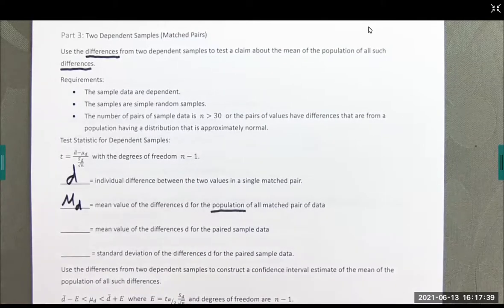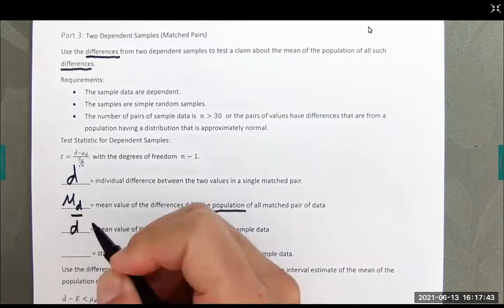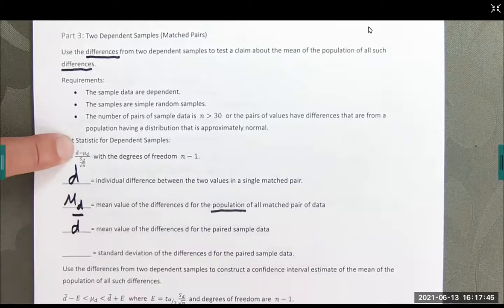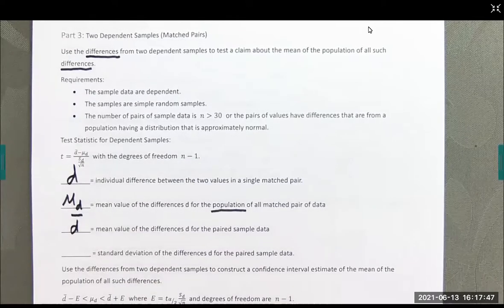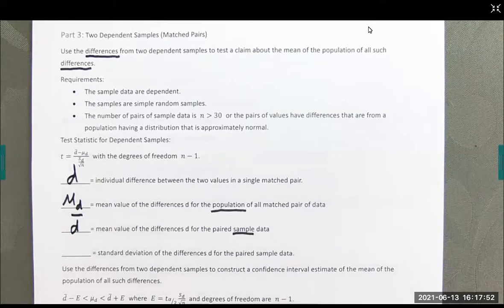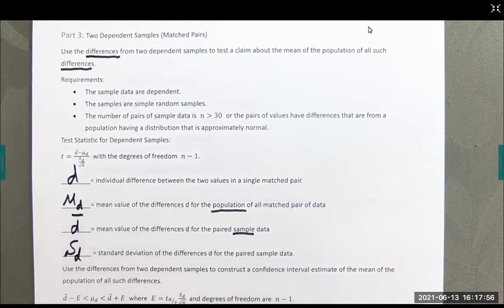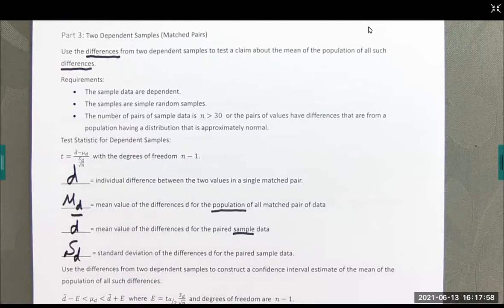D bar, which is in this formula right here, D bar is the mean value for the differences for the paired sample data. And S sub D is the standard deviation of the differences for the paired sample data.